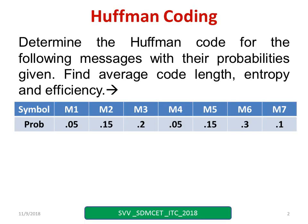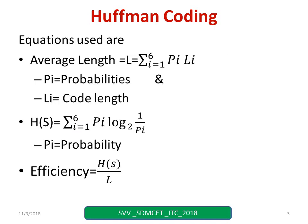Consider an example. Determine the Huffman code for the following message with their probabilities given. Find the average code length, entropy, as well as efficiency. These are the symbols M1, M2, or you can take S1, S2 like that. These are the equations we are going to use to find the average length, to find the entropy, to find the efficiency.